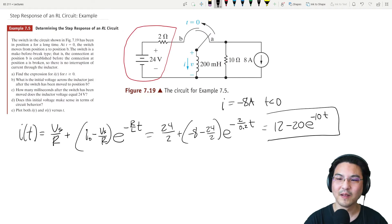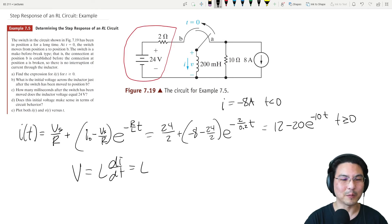Here we go, there's the current when t is greater than or equal to 0. What about the voltage? To get the voltage, voltage across an inductor is L di/dt, so it's just L times the time derivative of this.